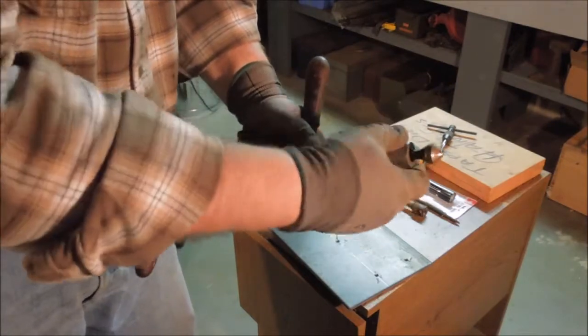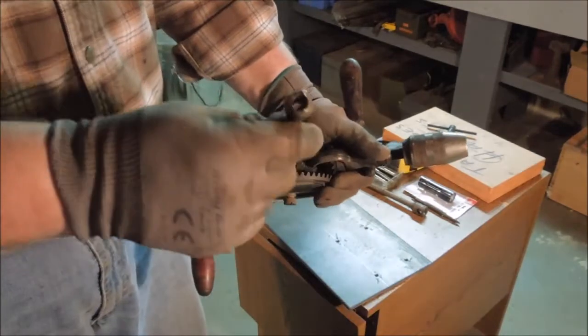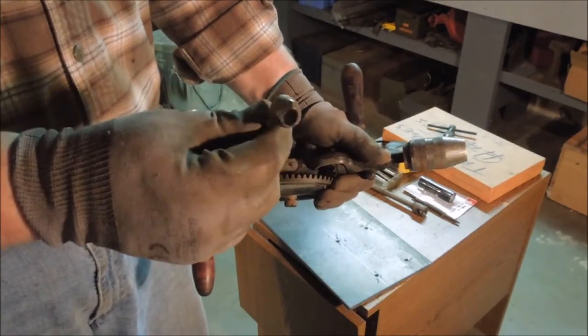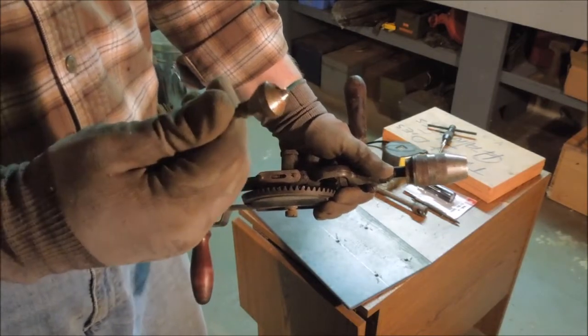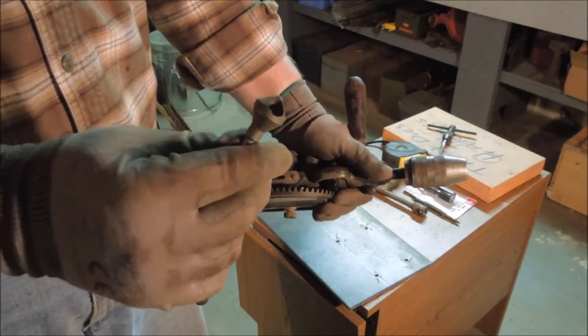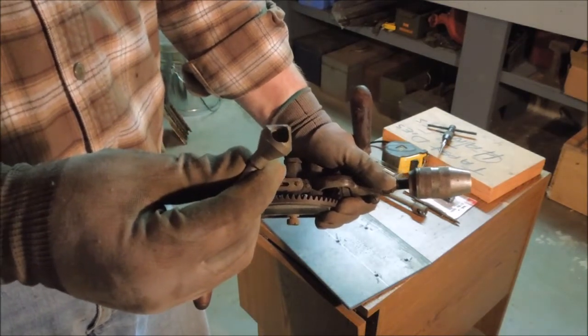All I have to do is loosen the chuck a little bit, take the countersink out. I like using these little single point countersinks, holdover from my toolmaker days. They work really good, they're easy to sharpen, and they hold up really well even in tool steel.